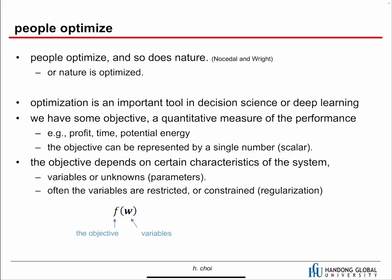People optimize, and so does nature. Everybody does optimization in our daily lives, and optimization is an important tool in decision science, deep learning, or in our daily lives. We have some objective, and this objective function is a quantitative measure of performance — something like profit, time, or potential energy. Do you want to optimize something in terms of profit? Then you can follow that direction. Or sometimes when we develop a system, time is a crucial factor, so we can minimize the consumed time.